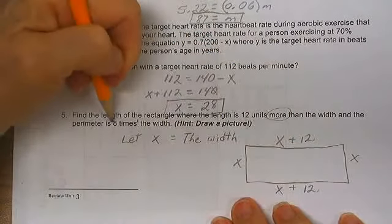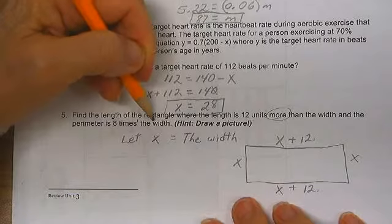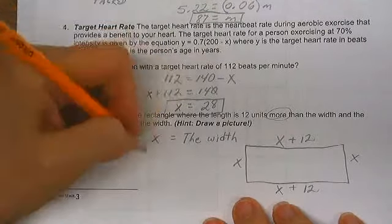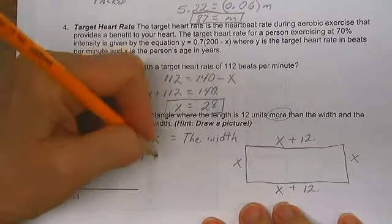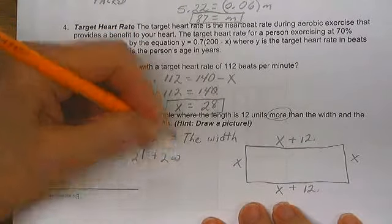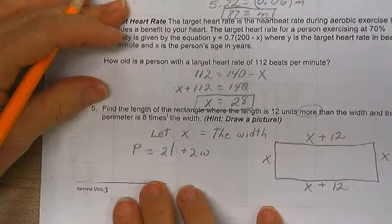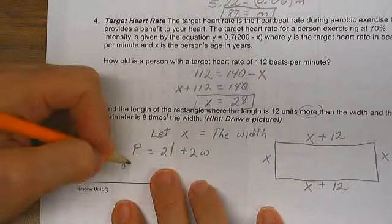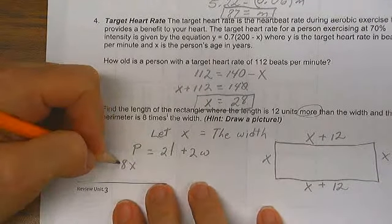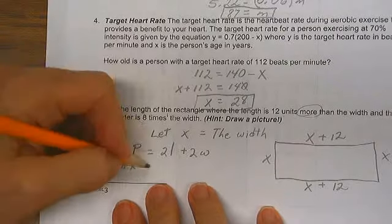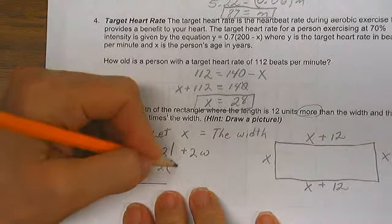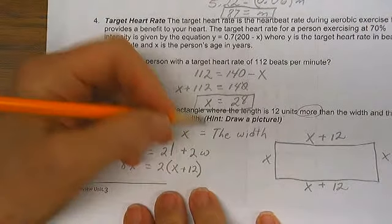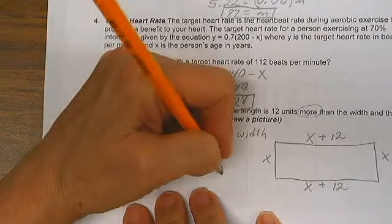And we know the perimeter is 8 times the width. So we know the perimeter is equal to 2 times the length plus 2 times the width. That's the definition of perimeter for a rectangle. The perimeter is 8 times the width, so we're going to call that 8x. 2 times the length is 2 times the quantity x plus 12. 2 times the width is 2x.